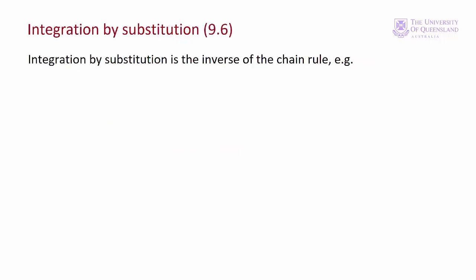To apply integration by substitution, we need an integrand of this general form. We have our composite function — or compound function — f of g of x. That's one term in the product; the other term is the first derivative of that inner function, or something close to it.